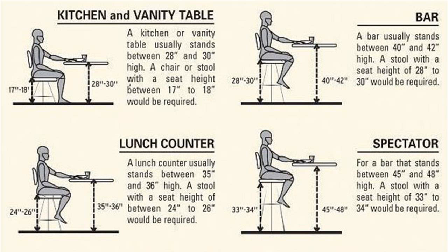Choose a bar stool with a seat that is approximately 12 inches below the bottom of the bar or counter for comfortable seating. If you want bar stools with arms, you may need to allow for additional space between the counter and the seat to accommodate the arms.